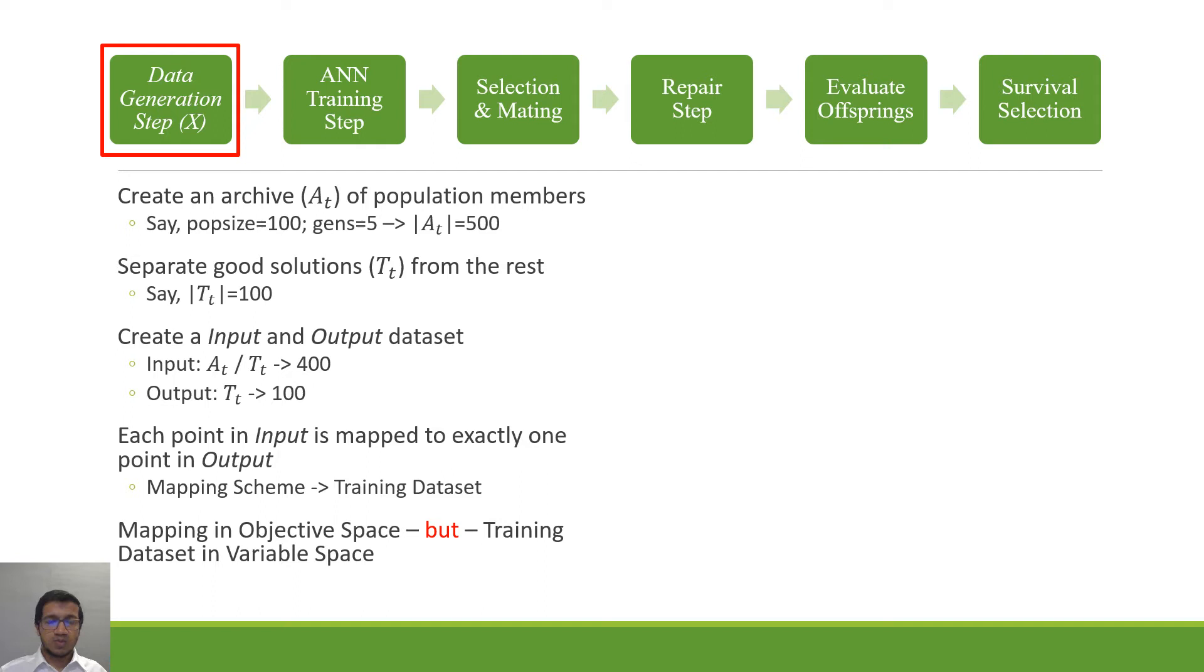So to begin with we start with the data generation step in which supposedly if we create an archive AT at generation T which is nothing but some previous collection of population from some previous generations. Say for this example where the population size was 100 and generations was 5, the archive size becomes 500.